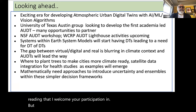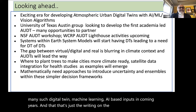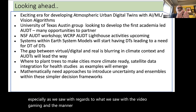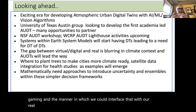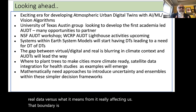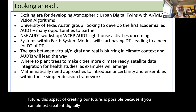Earth system models will start having many digital twin and ML/AI-based inputs in coming years. The boundary between what is virtual and what is real data is blurring quite a bit. This aspect of creating our future digitally has high potential — if you can almost create it digitally, there is a high likelihood you can create it in reality. Simple questions like where to plant trees to make cities climate-ready, or how to use satellite data for neighborhood health studies, are now within reach.